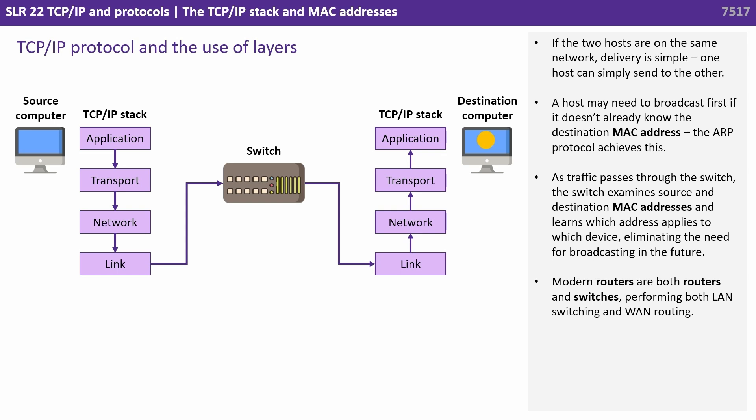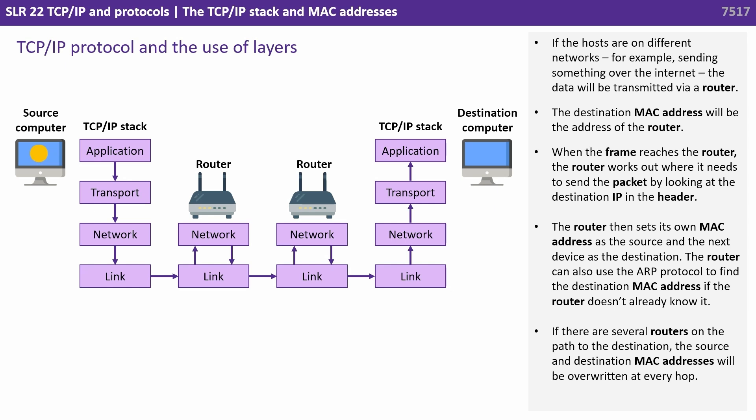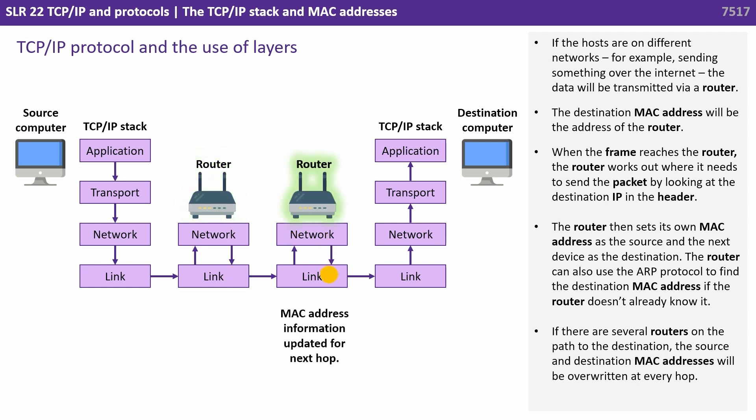Modern routers are both routers and switches, performing both LAN switching and WAN routing. If the hosts are on different networks — for example sending something over the internet — the data will be transmitted via a router. The destination MAC address will be the address of the router. When the frame reaches the router, it works out where to send the packet by looking at the destination IP in the header, then sets its own MAC address as the source and the next device as the destination. The router can also use ARP to find the destination MAC address if it doesn't already know it. If there are several routers on the path, the source and destination MAC addresses will be overwritten or updated at every hop.